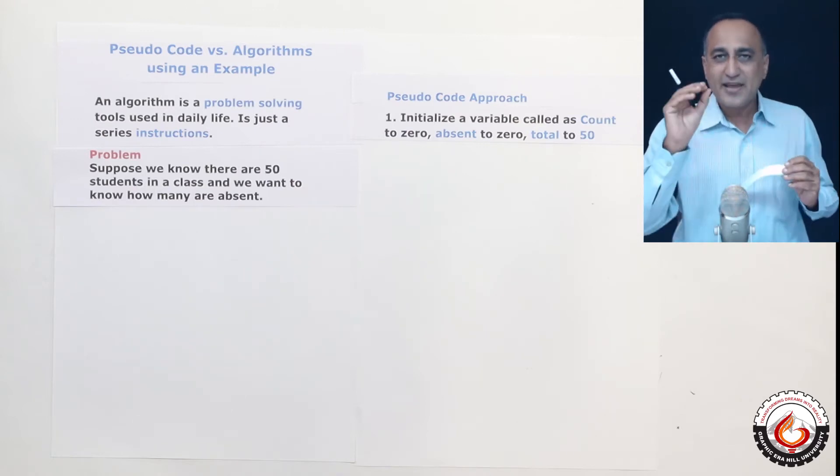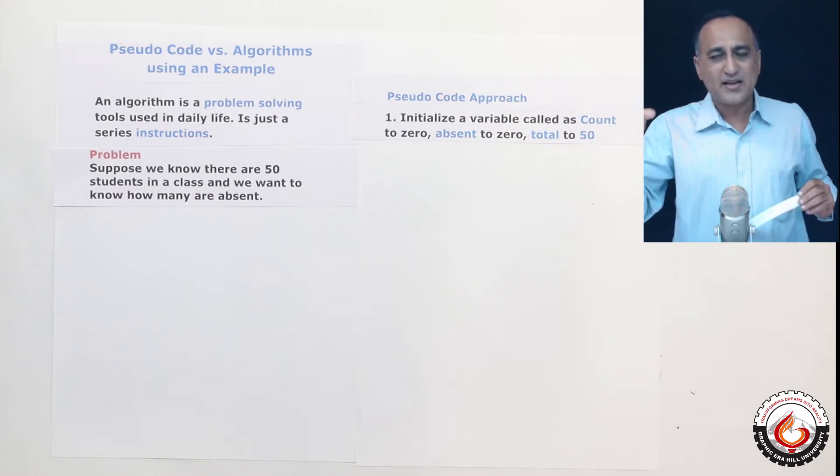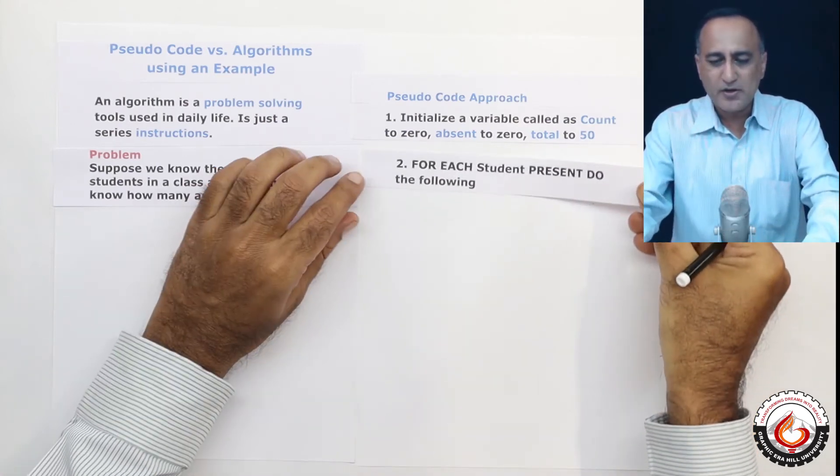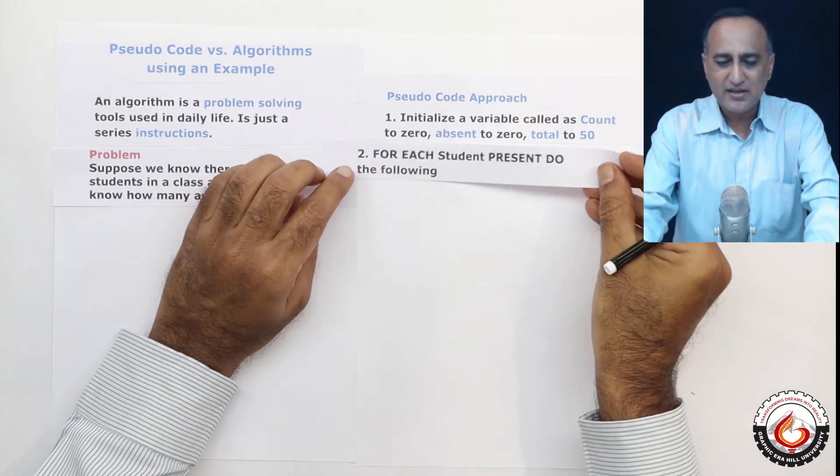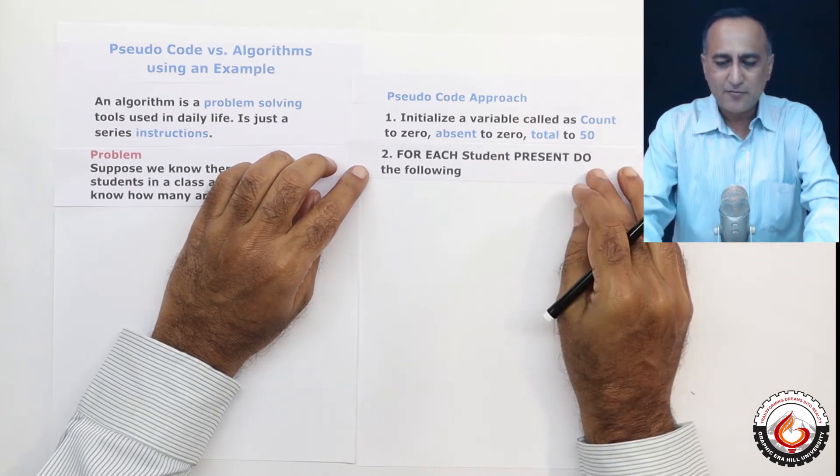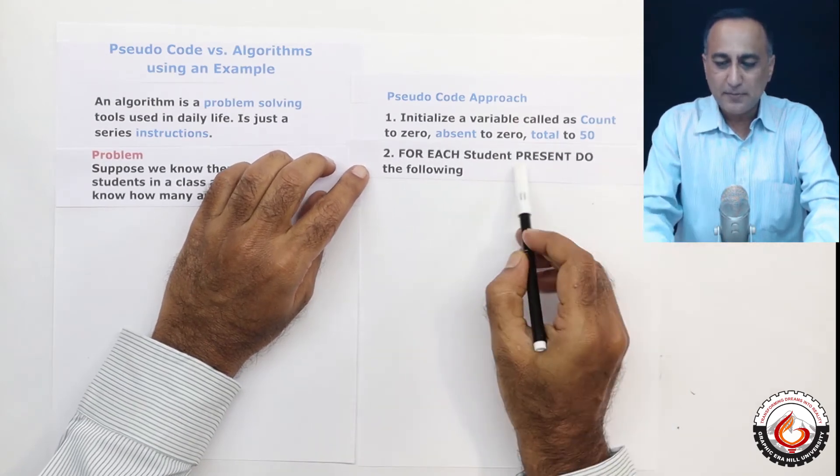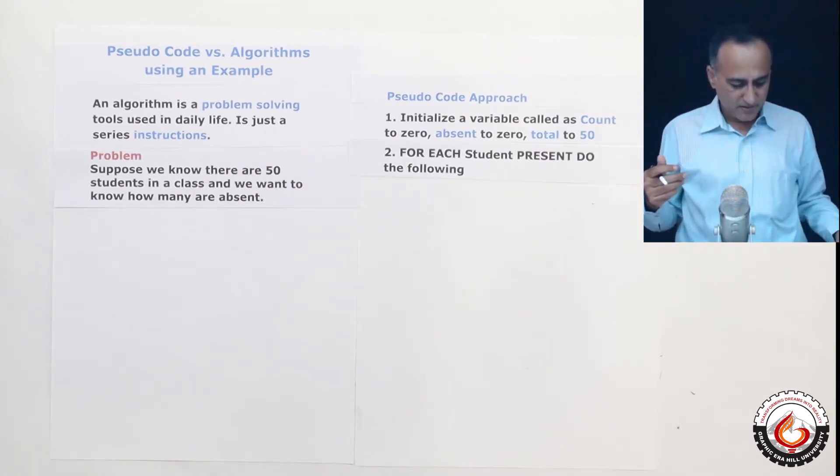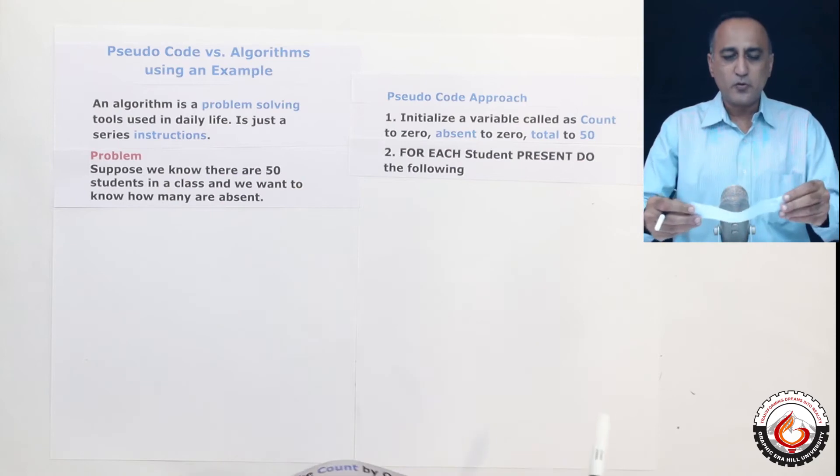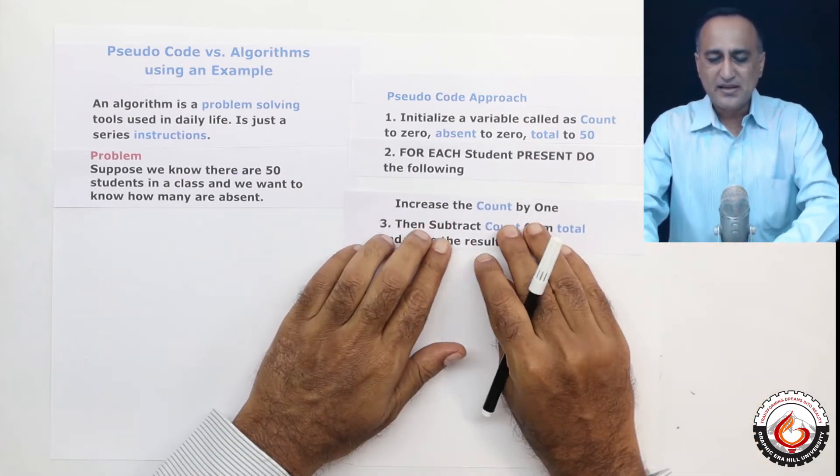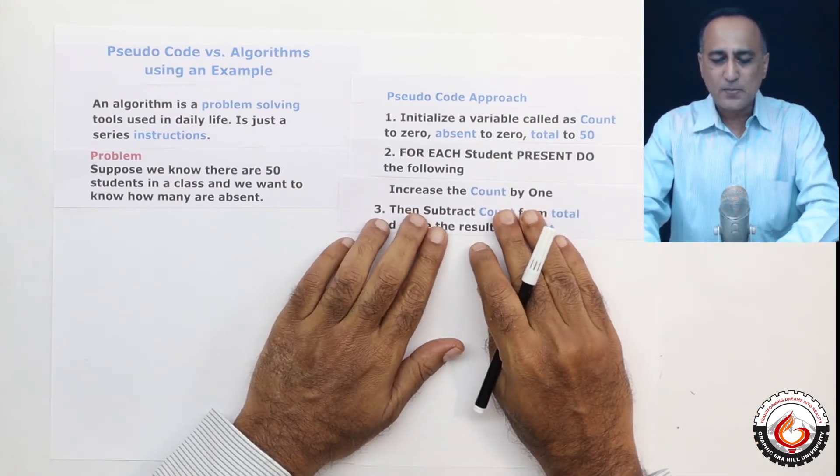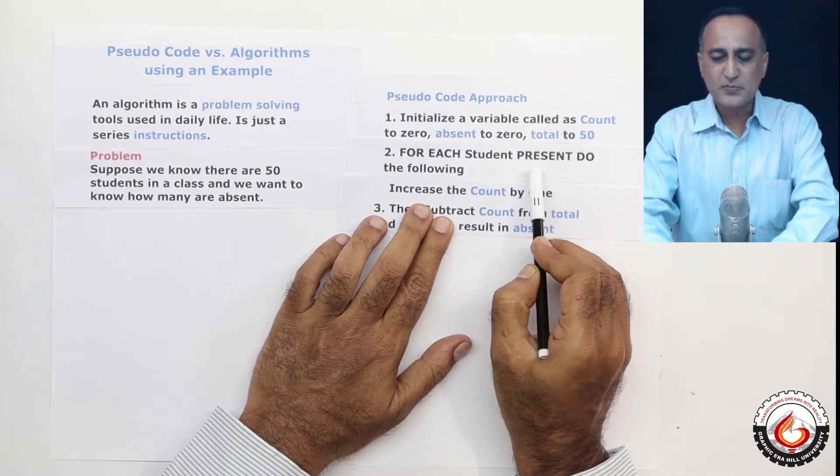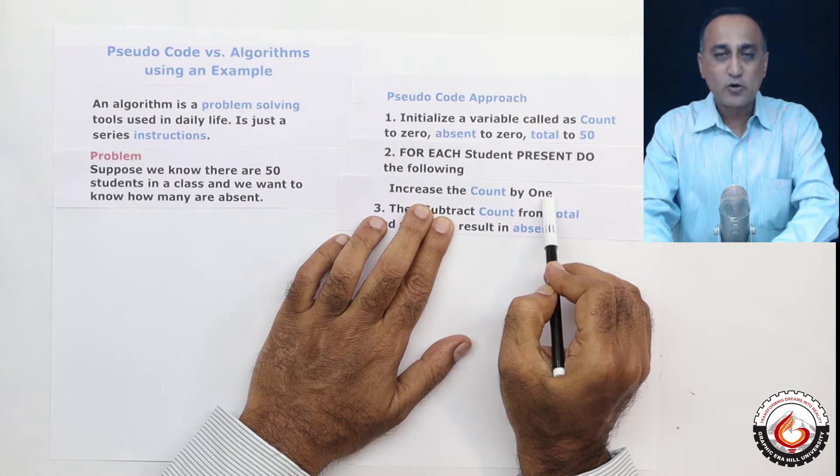Then what I am going to do is for every student or for each student in the class, I am going to increase the count by one. So if I have to do it using pseudocode, this is what I will write. So I will say for each student who is present, do the following. In the following, what I am going to do here is I am going to say increase the count by one. So step two is all about for every student who is present, I am increasing the count by one.